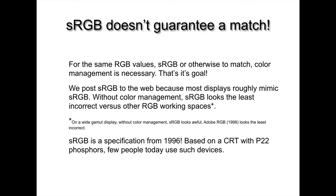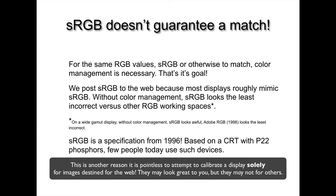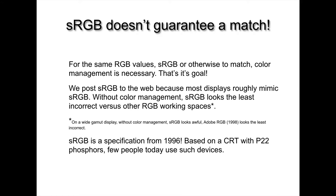sRGB is a specification from the past century, based on a CRT display with a specific set of color phosphors — not many devices like that are in use today. Modern LCD displays try to mimic sRGB and do a pretty good job, depending on which LCD you're using. But the internet and mobile devices without color management are the Wild West — we don't know if viewers are using a color managed browser, or how their displays are calibrated and profiled. So sRGB doesn't guarantee a match; it just guarantees it will look the least worst versus Adobe RGB or ProPhoto RGB on such unmanaged devices.